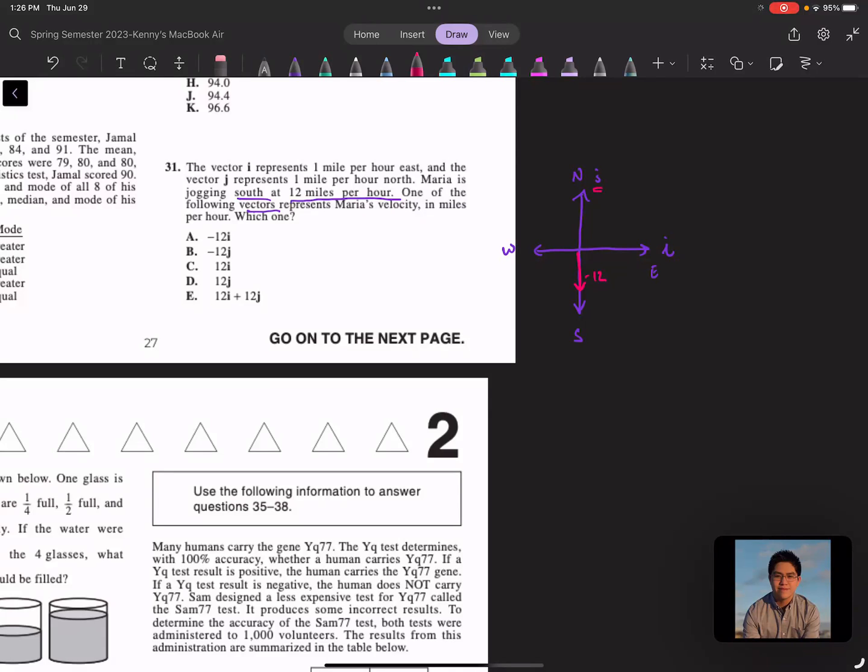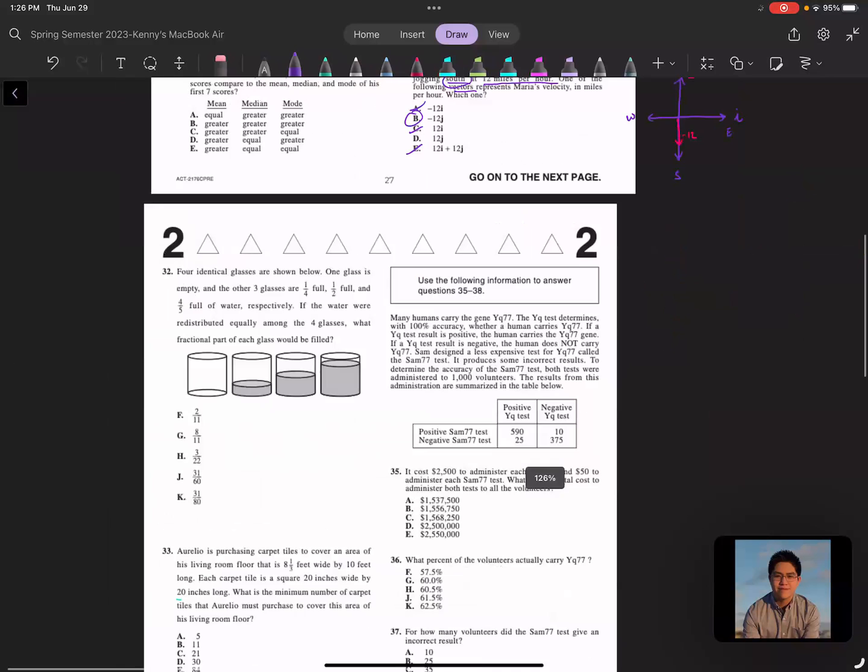So it'd be negative 12J. Looking at my answer, does that make sense? Yep. Remember, I would be east-west, so that makes no sense - A would be wrong. C makes no sense to have E. So really, is it 12J or negative J? In this case, you're talking about south, so it's going to be negative. Awesome, moving on.